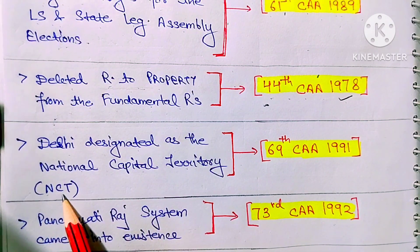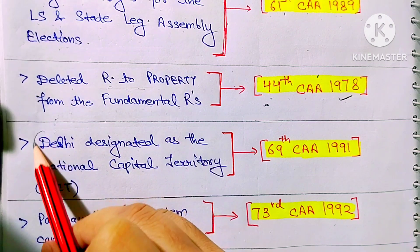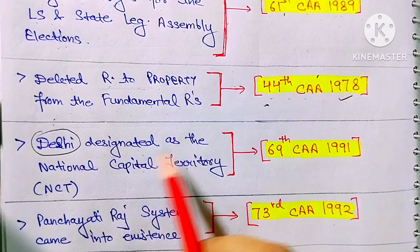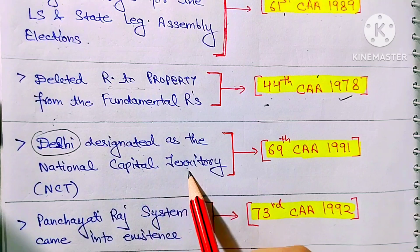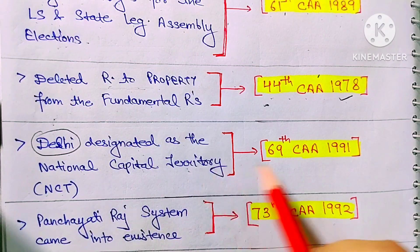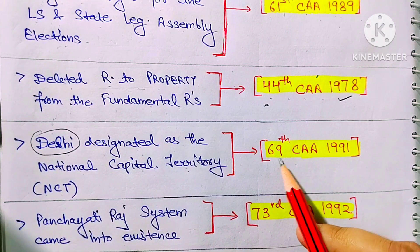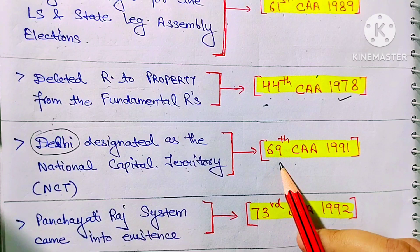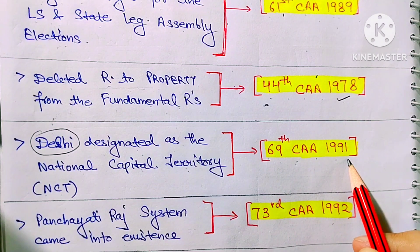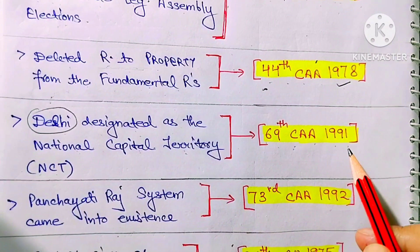Next: Delhi was designated as the National Capital Territory, abbreviated as NCT. This designation was given through the 69th Constitution Amendment Act 1991.